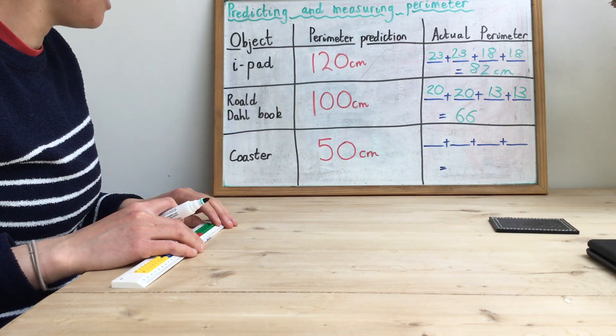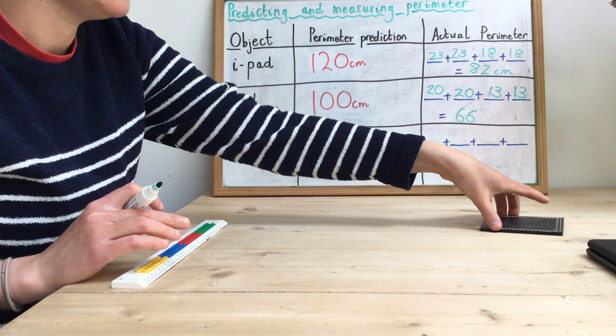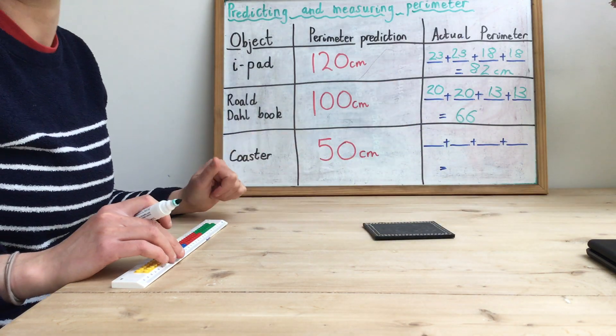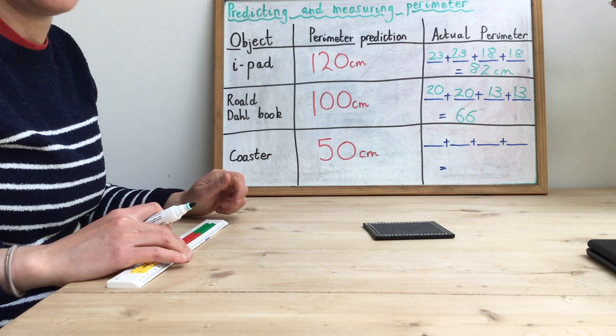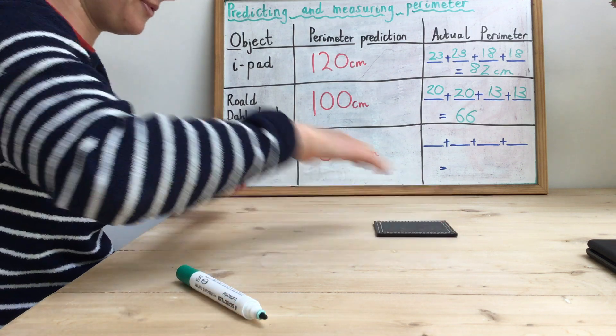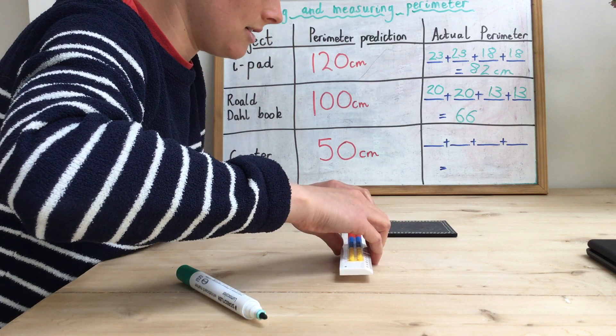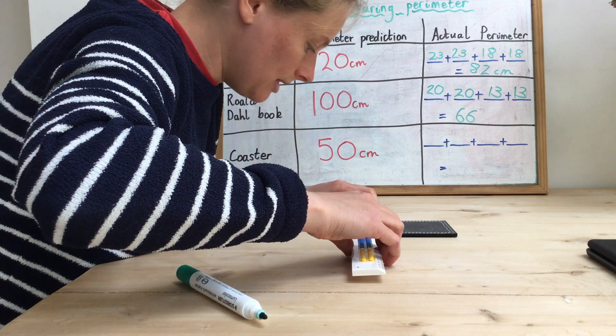The final object from my home that I'm going to measure is a coaster. So this is just to put drinks on. I predicted it's going to be 50 centimeters. Let's see how accurate I'm going to be. So this coaster is a square, so I know that every side will be the same length.